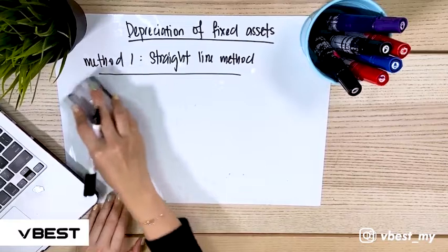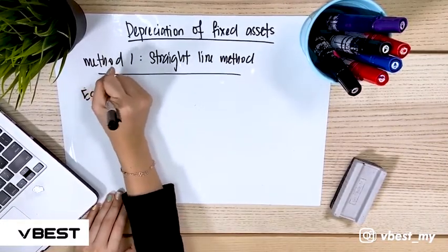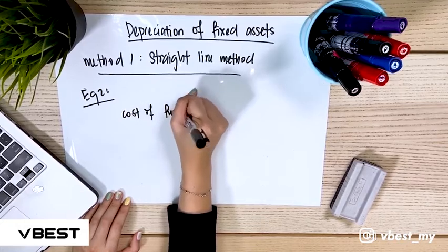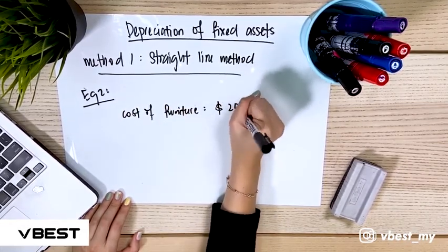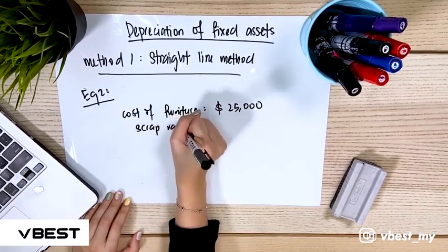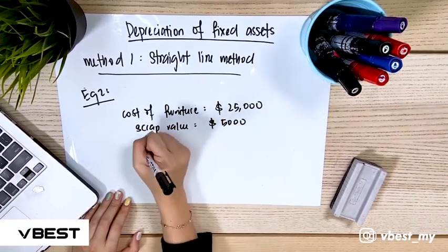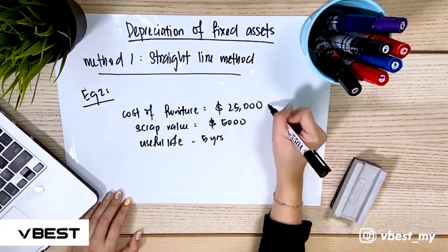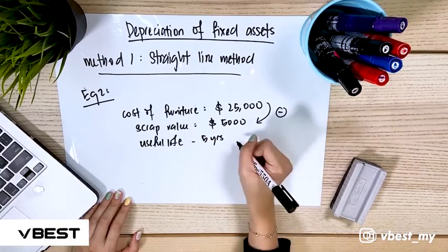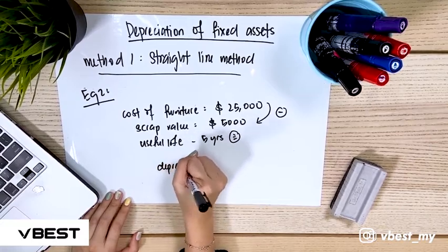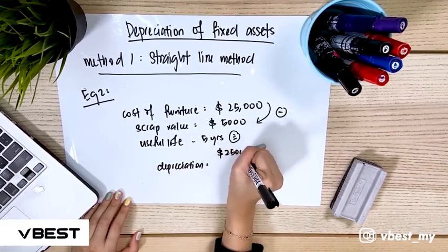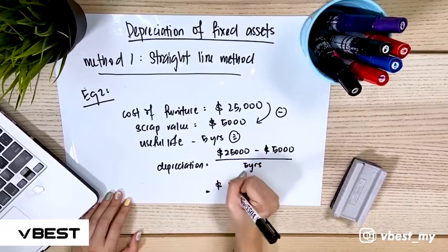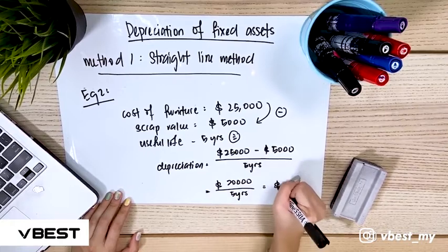Now for example two, we also use formula one but with a scrap value. The cost of furniture is 25,000, the scrap value is 5,000, and the useful life is five years. We first subtract the scrap value from the cost: 25,000 minus 5,000 gives 20,000. Then we divide by 5 years, giving a final depreciation of 4,000.